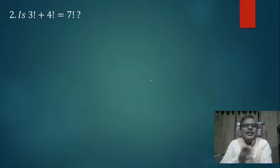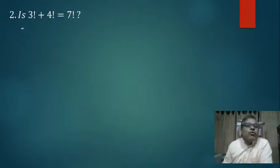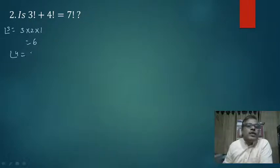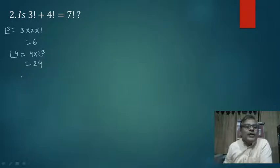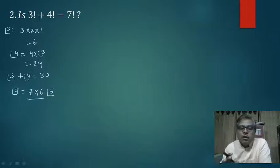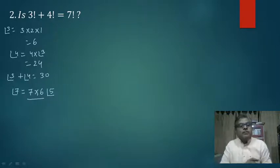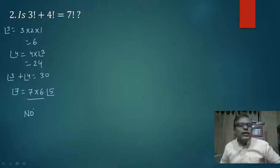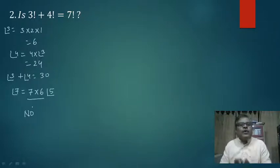Question number 2: क्या factorial 3 + factorial 4 = factorial 7 होगा? देखने से तो नहीं लग रहा, लेकिन check करते हैं। Factorial 3 = 3 × 2 × 1 = 6. Factorial 4 = 4 × factorial 3 = 4 × 6 = 24. तो factorial 3 + factorial 4 = 6 + 24 = 30. लेकिन factorial 7 में 7 × 6 = 42 ही हो जाता है — तो यह बिल्कुल equal नहीं है।